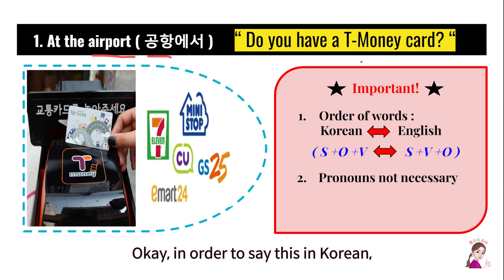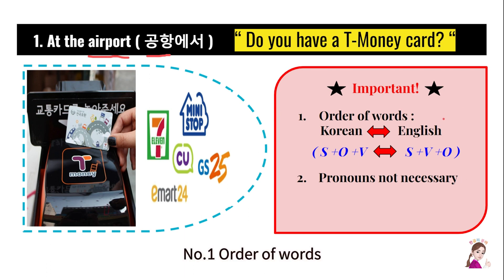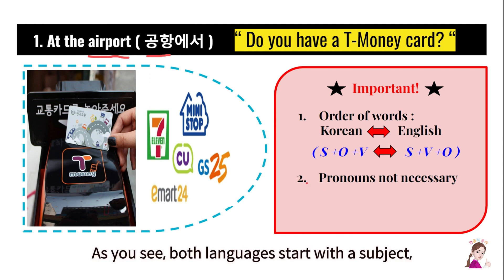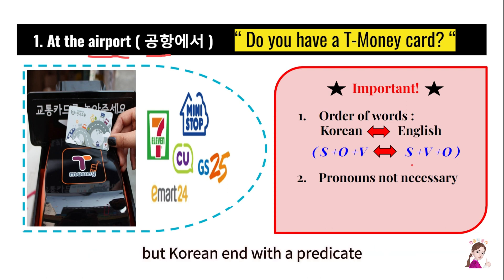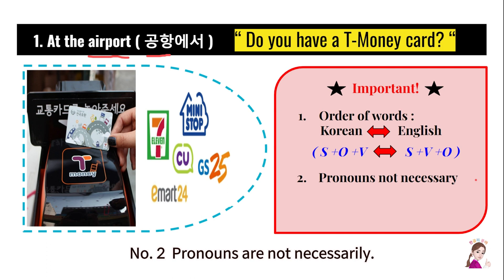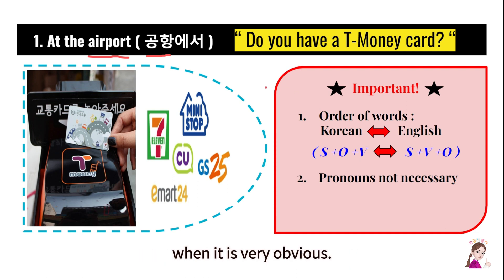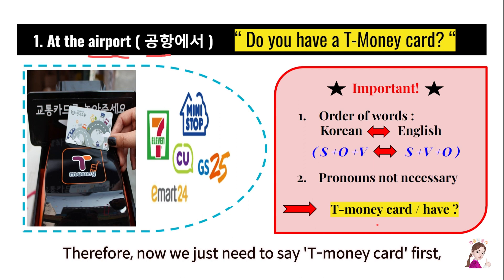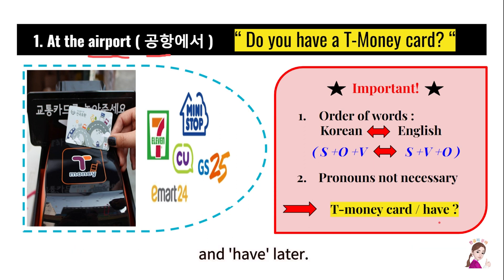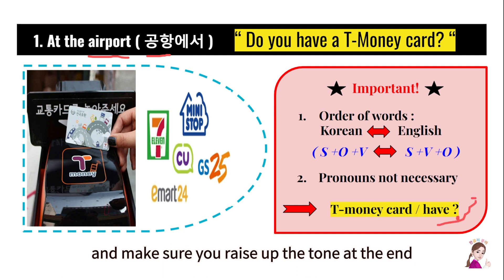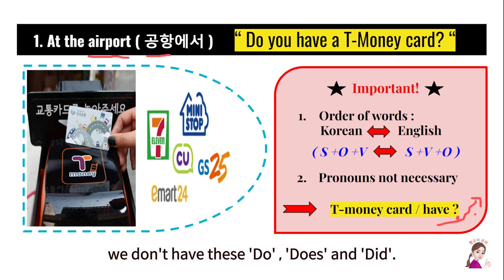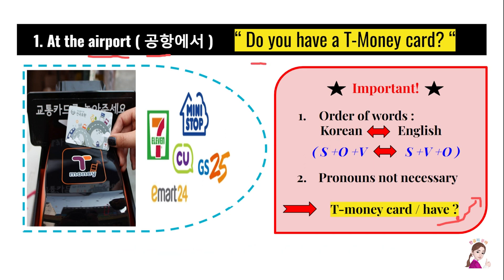Okay, in order to say this in Korean, it's important to know two concepts which are very different from English. Number 1: order of words. Both languages start with the subject, but Korean ends with predicates like a verb or an adjective, while English has predicates earlier. Number 2: pronouns are not necessary. Korean is a context-based language, so we don't have to say a pronoun when it's obvious. Now we just need to say T-money card first and 있어요 later. Make sure you raise up the tone at the end to indicate a question. We don't have 'do,' 'does,' or 'did' — we just raise the tone at the end to make a question. It's quite simple.